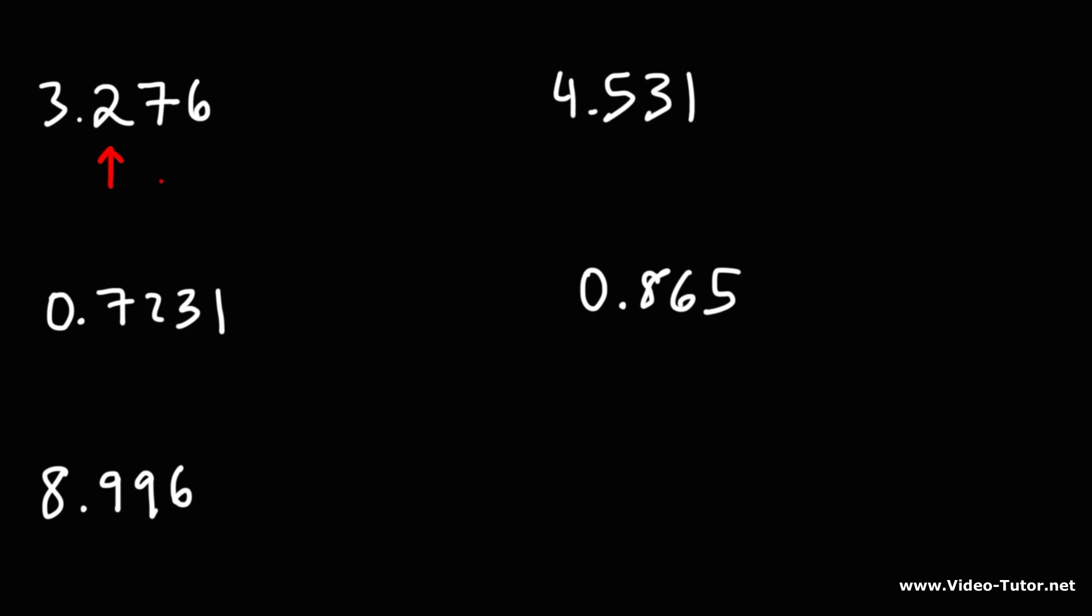The 2 is in the tenths place, the 7 is in the hundredths place, the 6 is in the thousandths place. So we need to focus on the 7. Since we want to round it to the nearest hundredths, we have two possibilities. Either we round it down to 3.27 or round it up to 3.28.